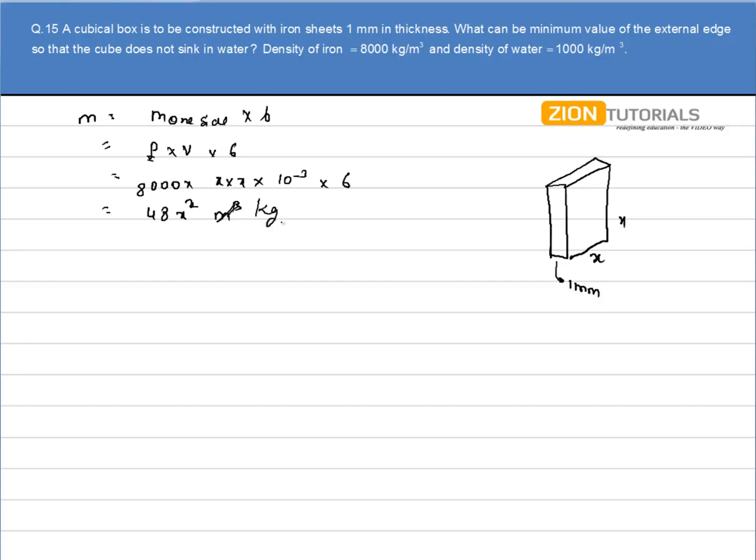Now this is the total weight of the whole box. We want that the cube does not sink, so mg should be equal to vρg. The mass as I calculated is 48x².